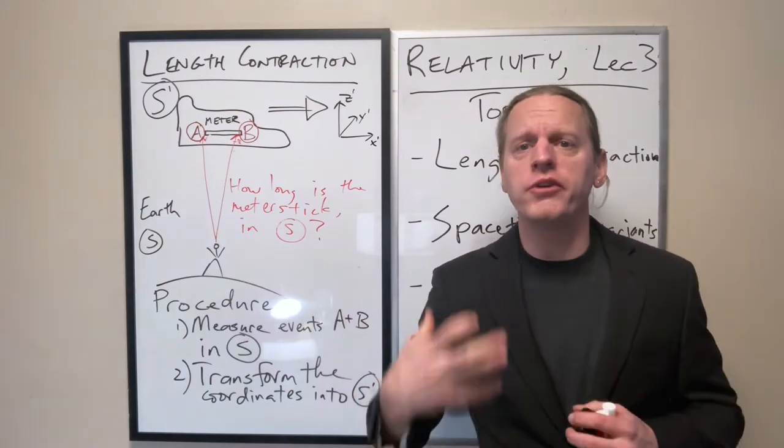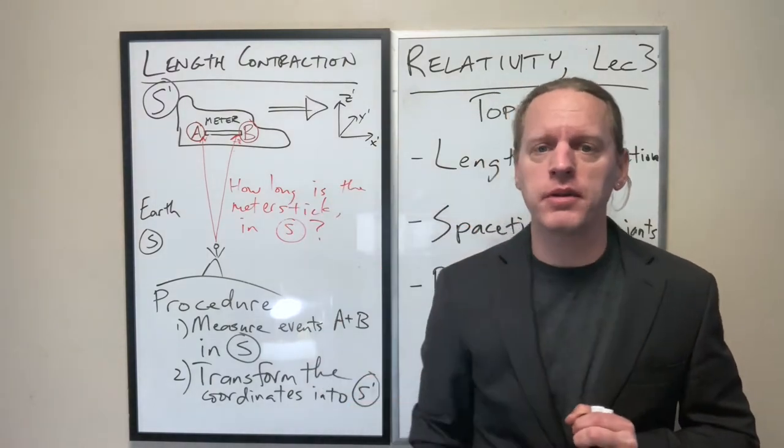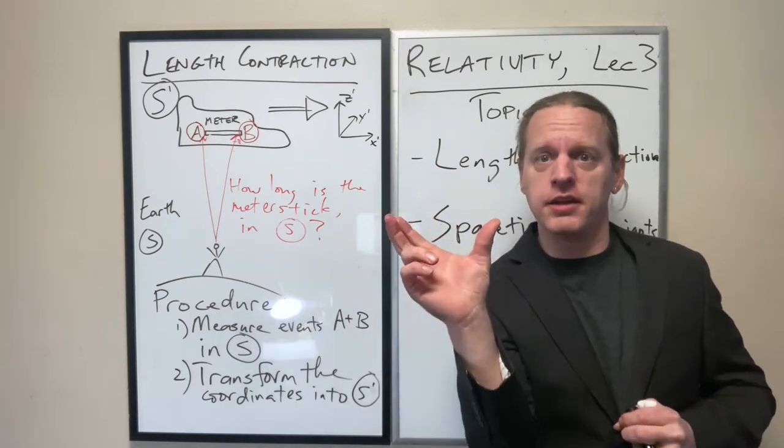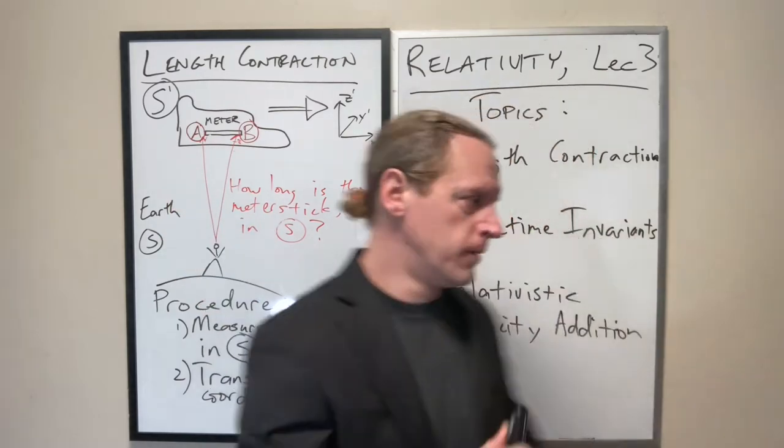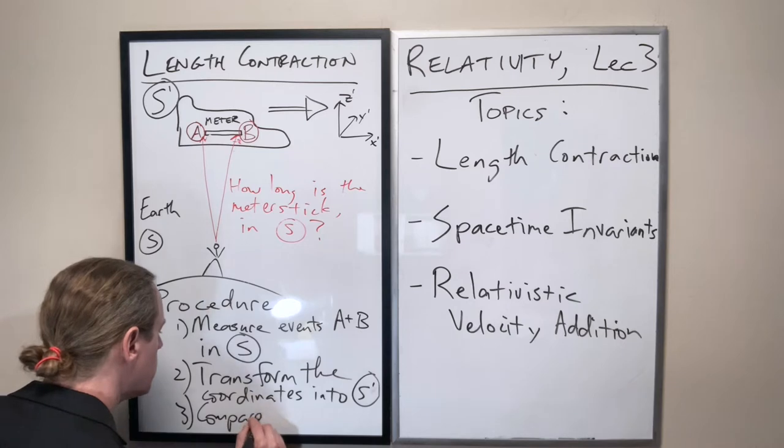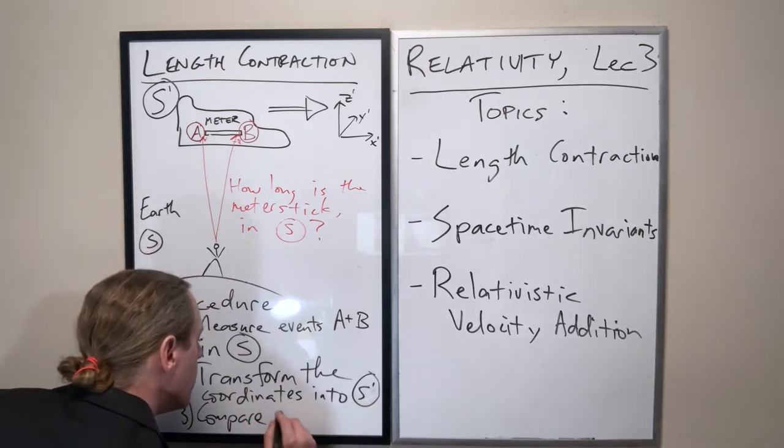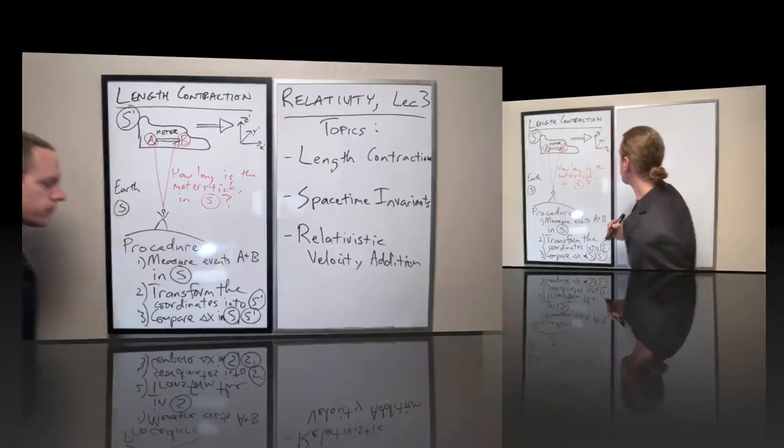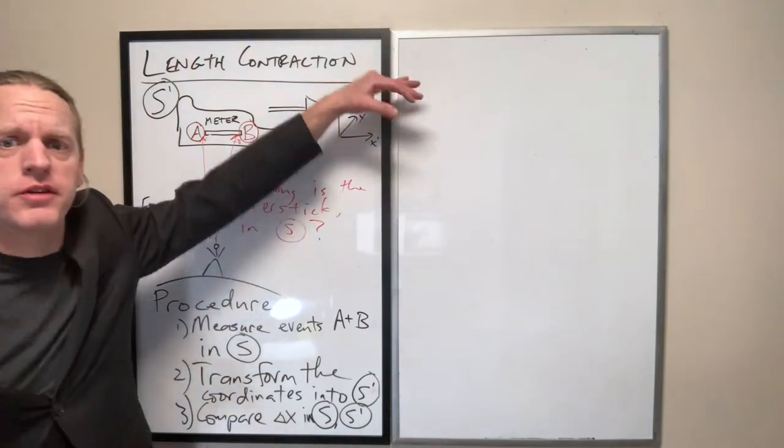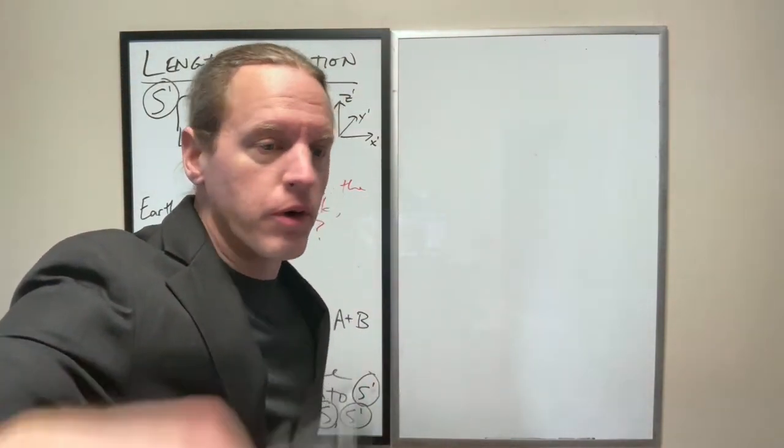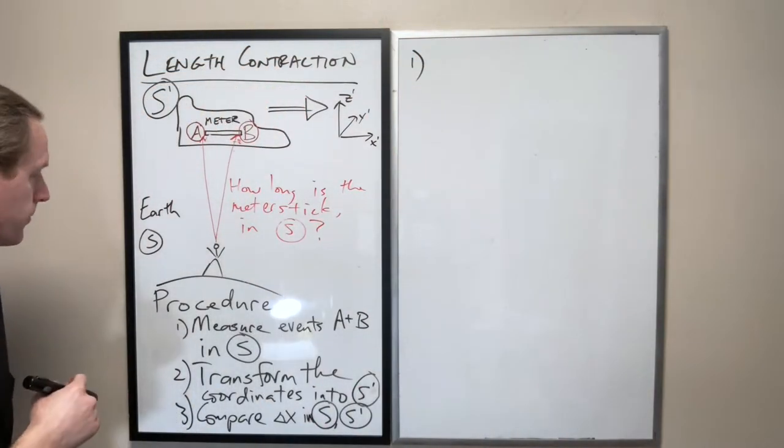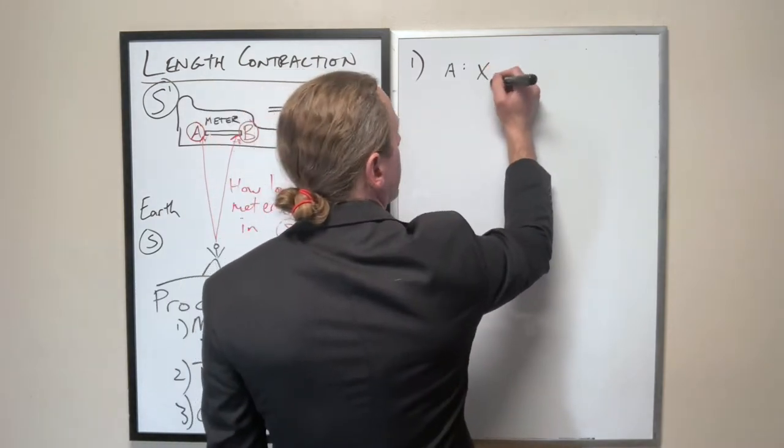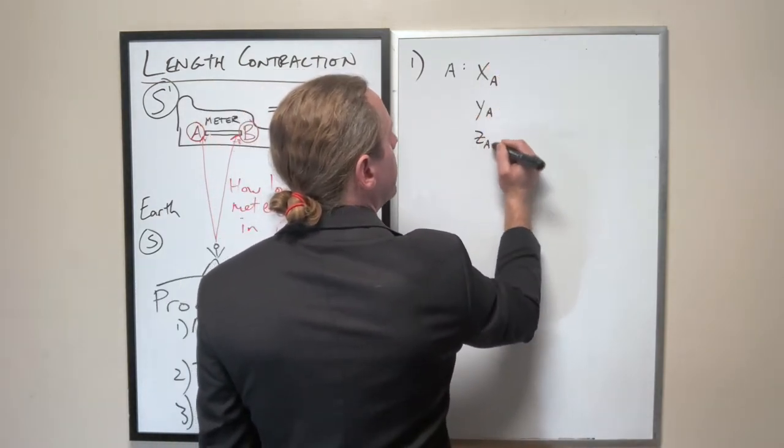And then finally, once we do that, once you know how the coordinates or the events as described in A and B separately, in S and S prime, now all you have to do is look at what is the difference in length in S, and compare it to the measured difference in length in S prime. Compare delta X in S and S prime. So I'll go ahead and do this according to the steps that I've already listed out here. So for measuring the events in S. Here, I'm just going to label it for event A. I'm going to label it as XA, YA, ZA, and TA.